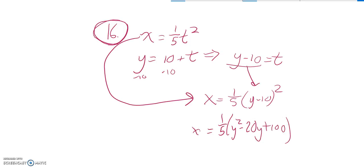Squaring means times itself. Distribute that 1 fifth into there. So 1 fifth Y squared minus 1 fifth of 20 is 4. 1 fifth of 100 is 20.